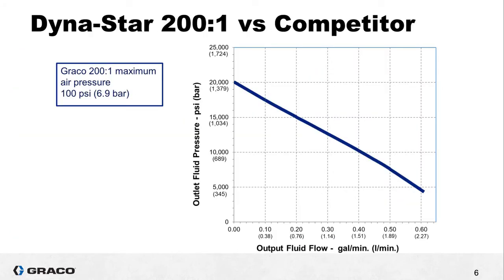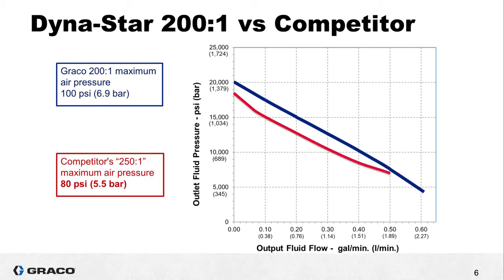Now let's copy and paste the information from the two separate performance charts so that we can compare the pump curves head-to-head. Here's our 100 psi line for the Dynastar 200 to 1 and here is the competitors performance curve at maximum pressure for their high pressure pump.